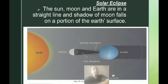Solar eclipse occurs when sun, moon, and Earth are in a straight line and the moon is between sun and Earth, and the shadow of moon falls on a portion of the Earth.